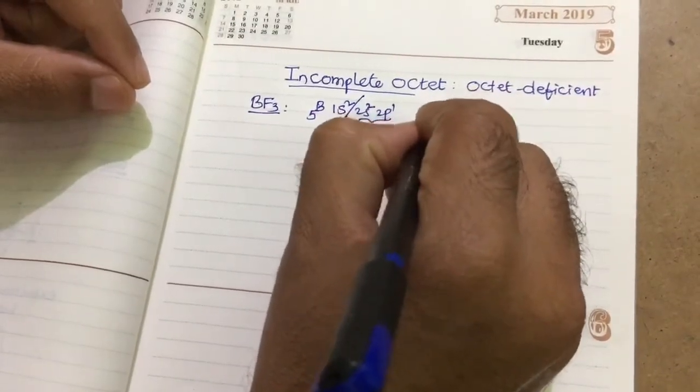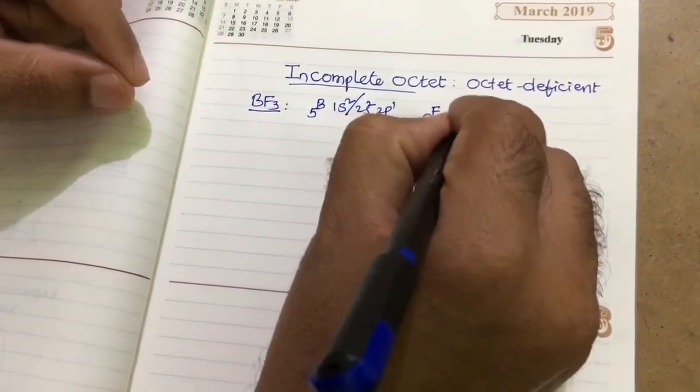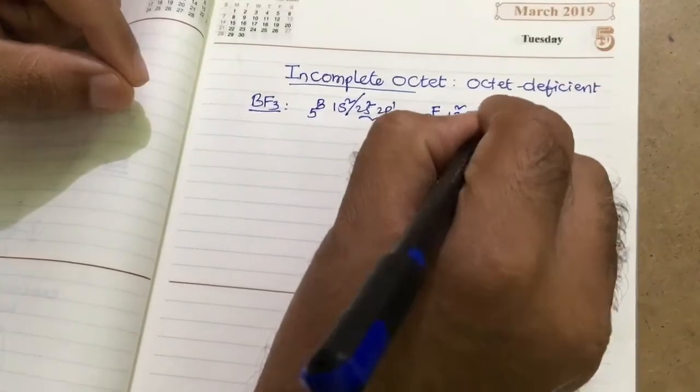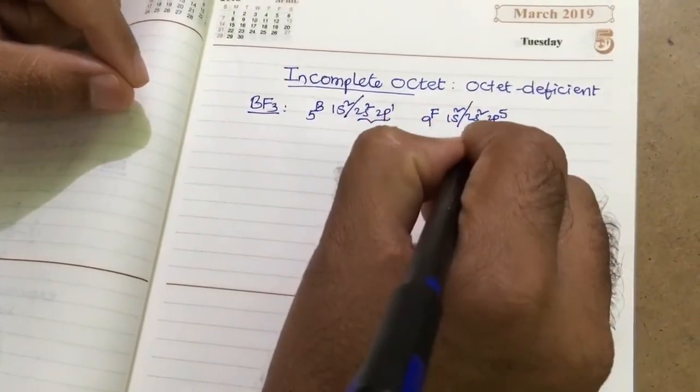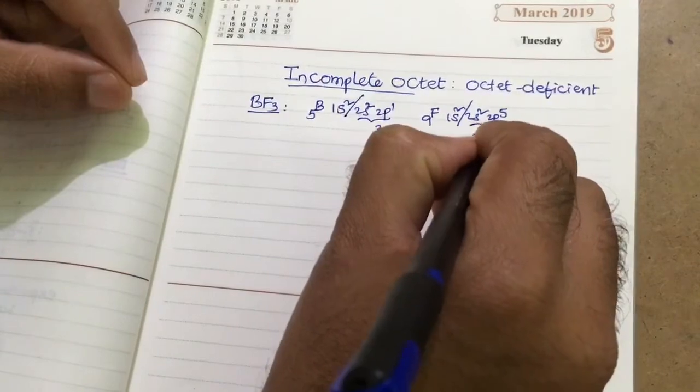Then here in valence shell, we have 3 electrons, 2 plus 1. Fluorine atomic number 9: 1s2, 2s2, 2p5. In valence shell, we have 2 plus 5, that is 7 electrons.